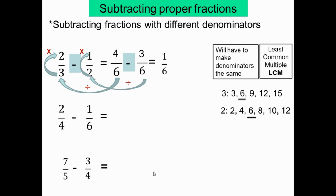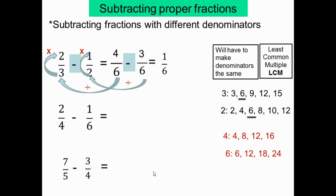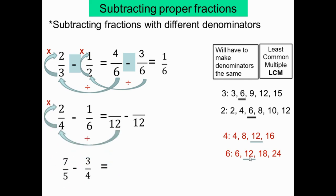Ok. Numéro 1 de l'exercice: 2 sur 4 moins 1 sur 6. Les dénominateurs sont différents. Il faut trouver le LCM. Multiples de 4: 4, 8, 12, 16... Multiples de 6: 6, 12, 18, 24... Le LCM est 12. Donc le dénominateur commun est 12. 12 divisé par 4 égal 3 fois 2 égal 6. 12 divisé par 6 égal 2 fois 1 égal 2.